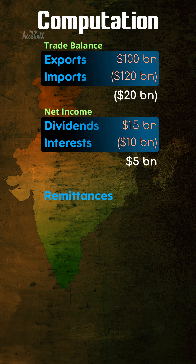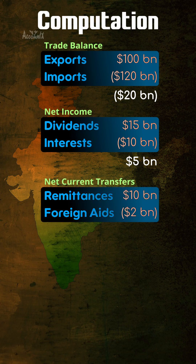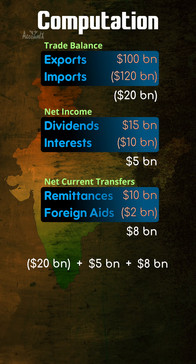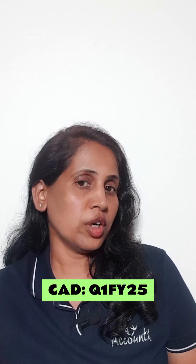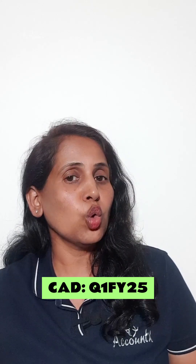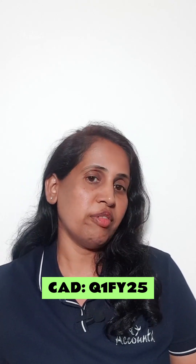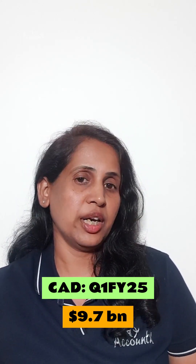Then let's say remittances received from overseas employees is $10 billion and foreign aid sent is $2 billion. So this category has a surplus of $8 billion. The total of this, which is minus $7 billion, is the current account deficit. India's current account deficit in Q1 FY25 was $9.7 billion.